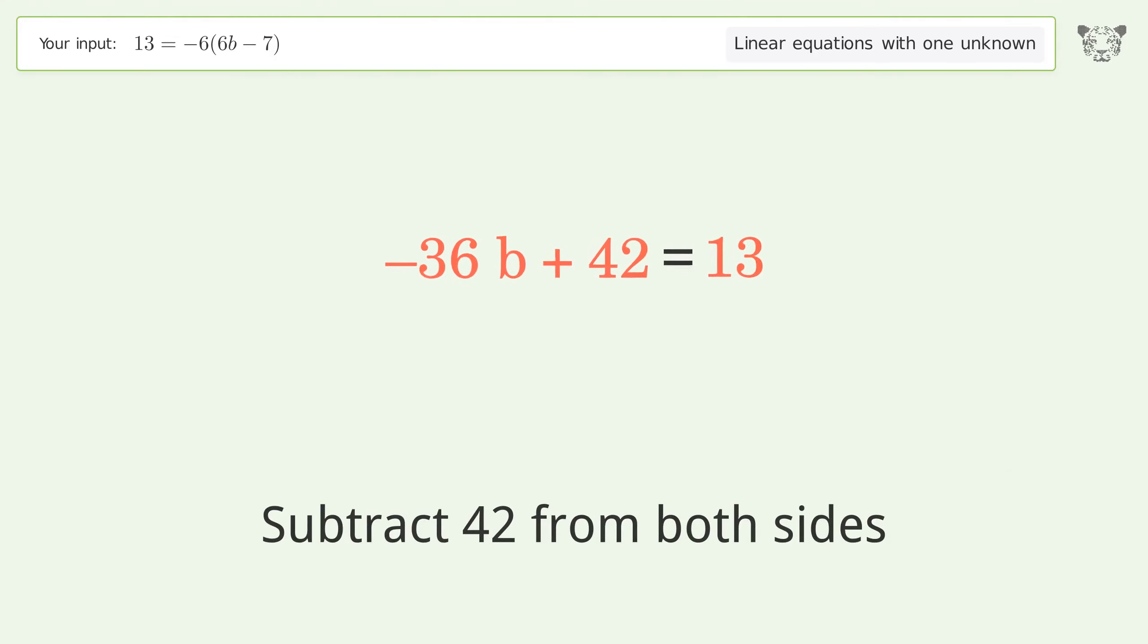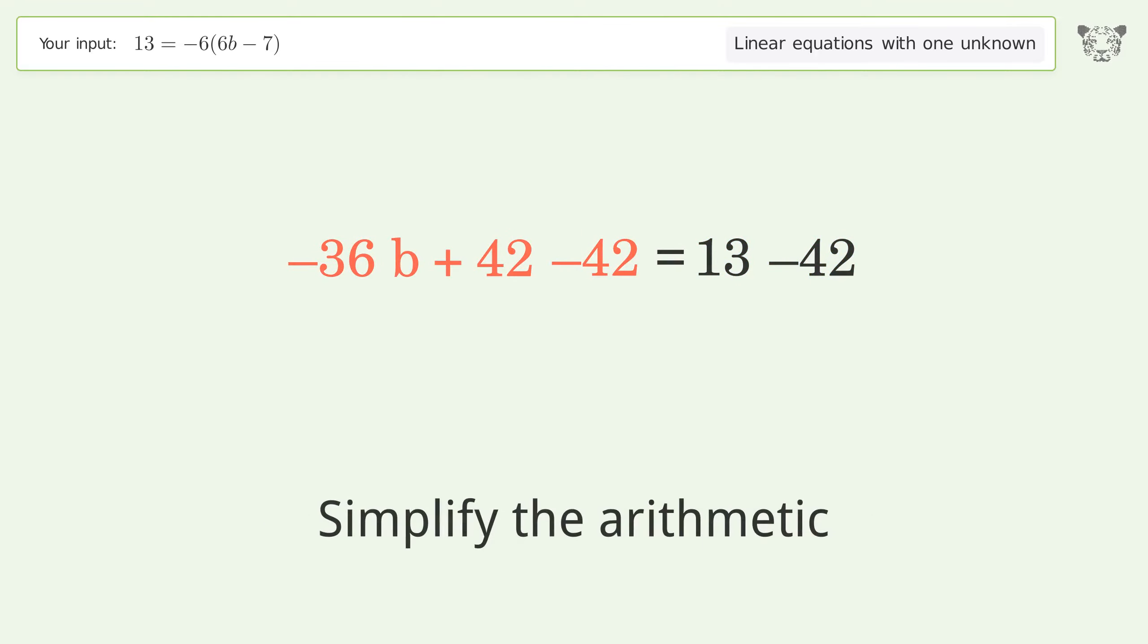Group all constants on the right side of the equation. Subtract 42 from both sides. Simplify the arithmetic.